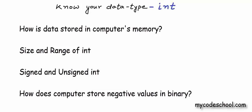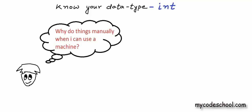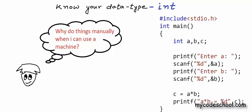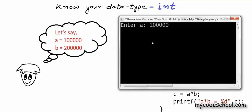In our previous lesson we saw how we can use arithmetic operators to perform mathematical calculations in our program. Albert, a student of my code school, has written a simple program to find the product of two numbers, asking the user to input two numbers A and B and printing their product. When he runs the program for A equal to 100,000 and B equal to 200,000, he is getting a negative value for the product of these two positive numbers.